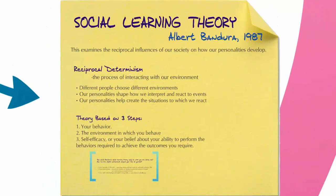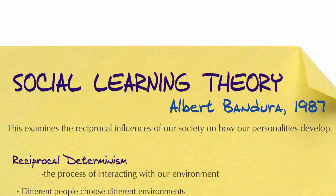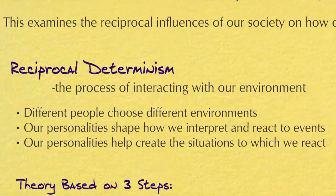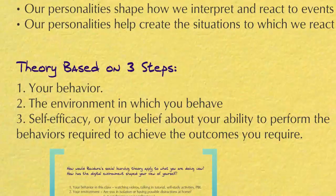Let's move on to social learning theory. Albert Bandura examined the reciprocal influences of our society on how our personalities develop, and he called the process of us interacting with our environment reciprocal determinism. Different people choose different environments, our personalities shape how we interpret and react to events, and our personalities then help create the situations to which we react. This theory is based on three steps: first, your behavior; second, the environment in which you behave; and third, self-efficacy — your belief about your ability to perform the behaviors required to achieve the outcomes you want.